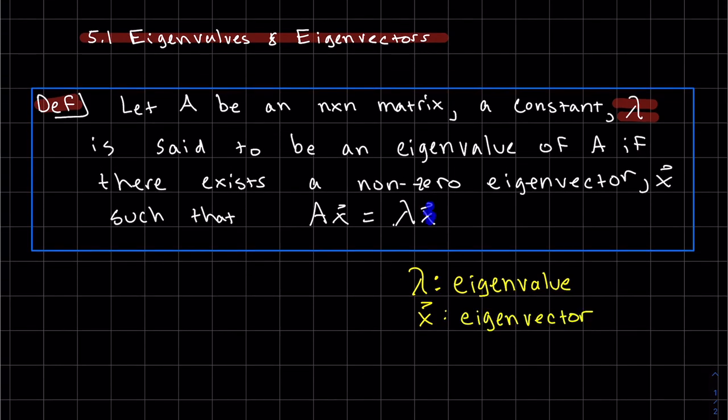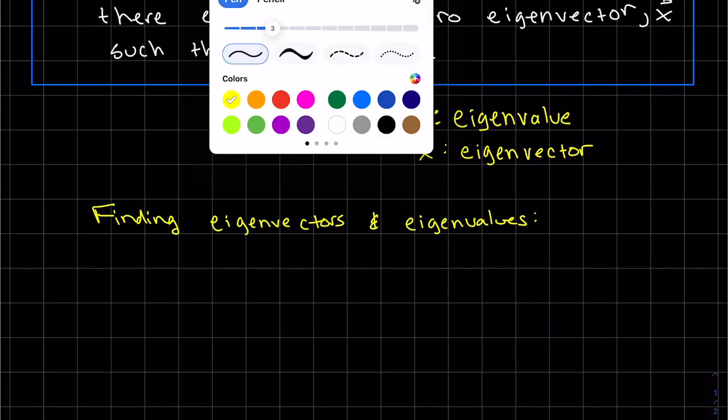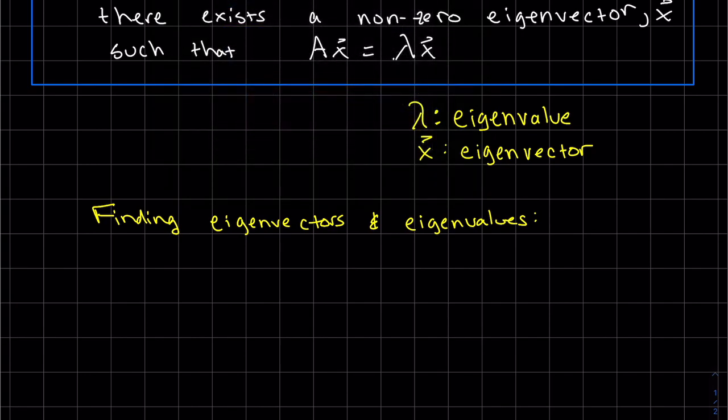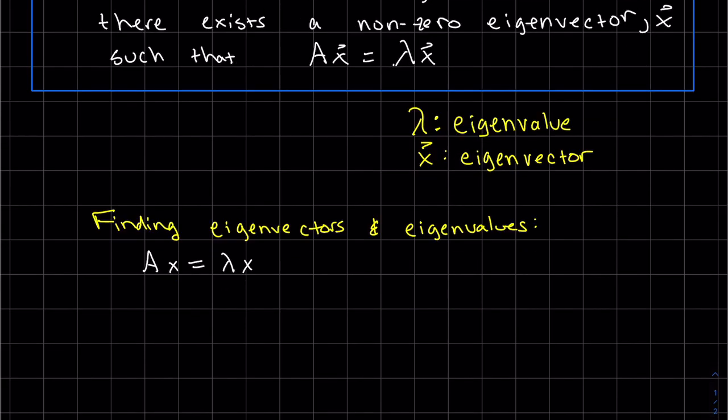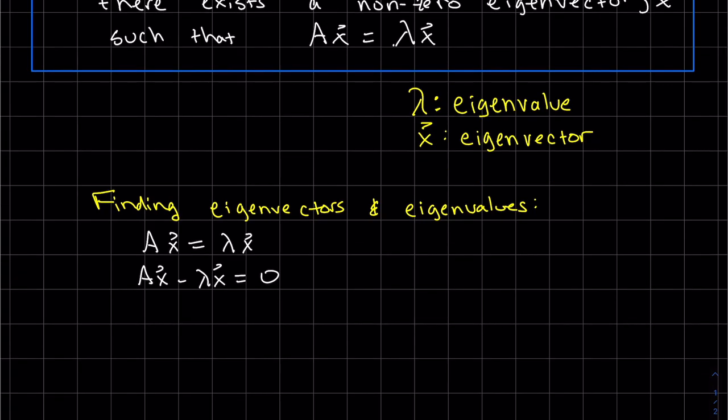And we have lambda is my eigenvalue, and my X is my eigenvector. Notice that the vector X is a multiple of a scalar, so it's dependent. So in order to find eigenvectors and eigenvalues, we're going to start off with this equation. We want zero on one side, so I'm going to subtract lambda X, and we're going to go ahead and factor out that eigenvector.